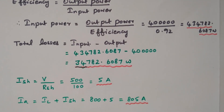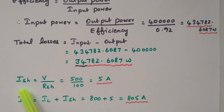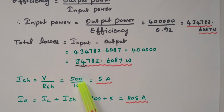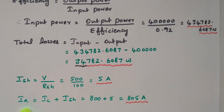Our aim is to find the armature resistance. First, we find the shunt field current: ISH = V / RSH. Because of long shunt, the full terminal voltage is applied across the shunt field, so ISH = 500 / 100 = 5 ampere. The armature current Ia = IL + ISH = 800 + 5 = 805 ampere.